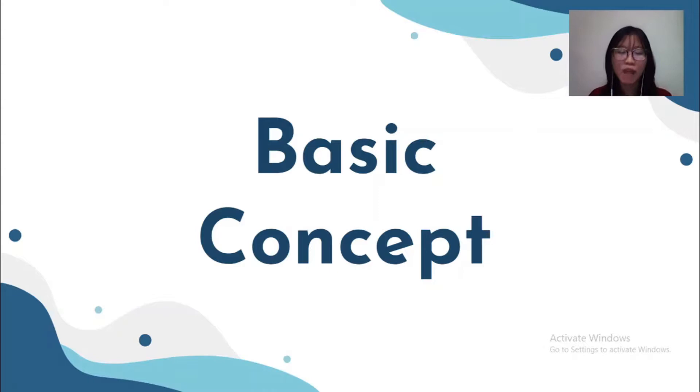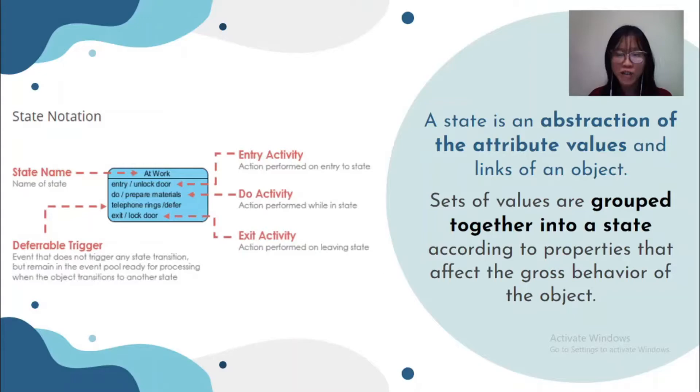Hi, my name is Rachel. I will continue with the basic concept of state machine diagram. First of all, what is a state? It's an abstraction of the attribute values and links of an object. The set of values are grouped together into a state according to the properties that affect the gross behavior of the object. From the state notation here, we can see that other than the name of state, the entry activities, current activities, exit activities, and the event trigger will also be listed here.